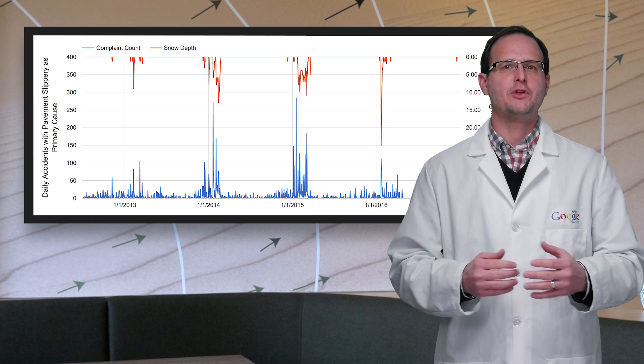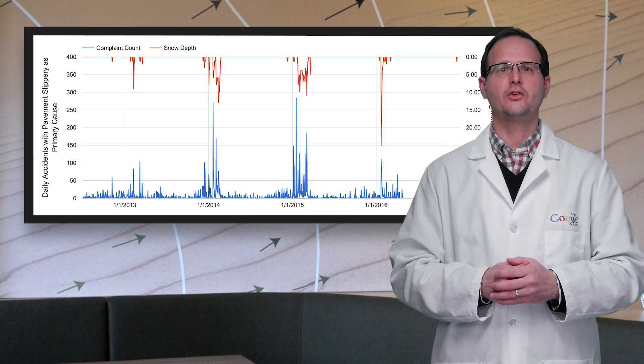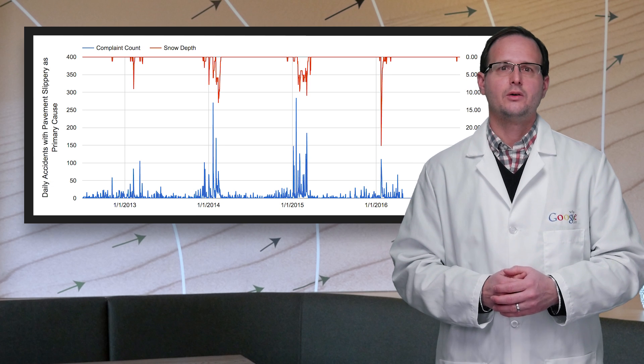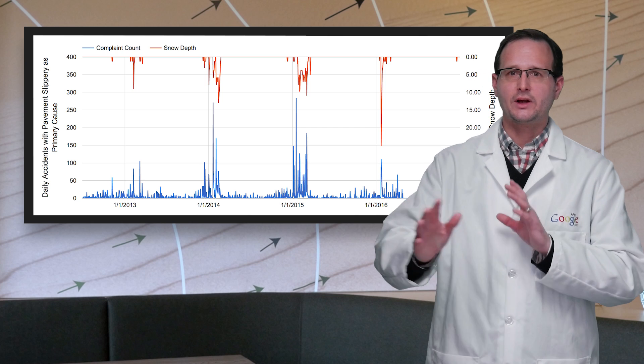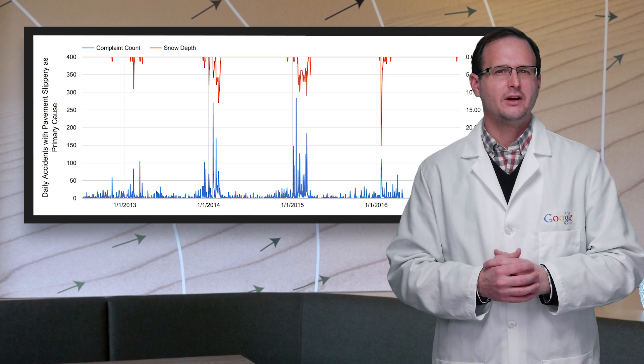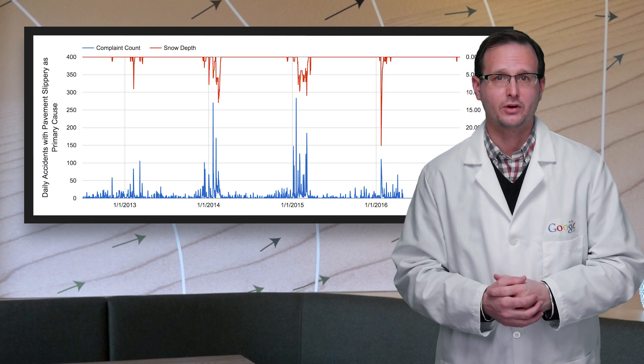Graphing both against time, there's some evidence that slipping accidents increases when there's heavy snow. What about gusty winds pushing runaway cars down the streets of New York? I'd like it to be true, but does the data support it?